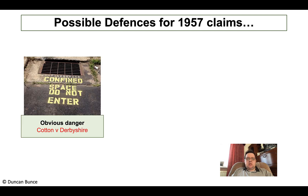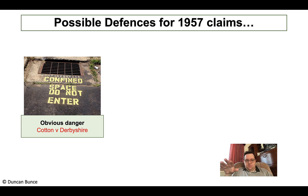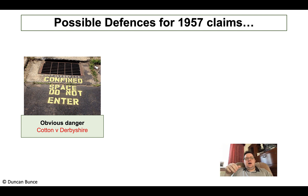Another defence is obvious danger — the key case is Cotton v Derbyshire. An intoxicated man headed to a beauty spot, walked by the river, fell from the cliff edge. There was a sign saying keep to the path, but the Court of Appeal said where the danger is obvious, there is really no need for the occupier to give a sign at all. This could be a complete defence.